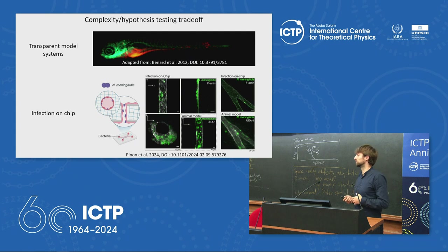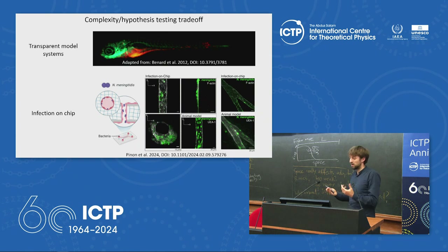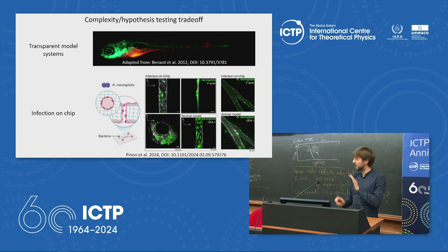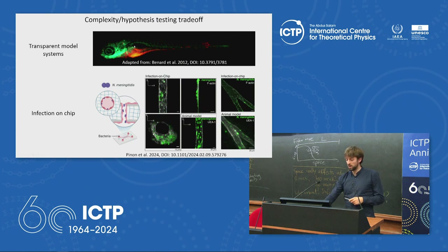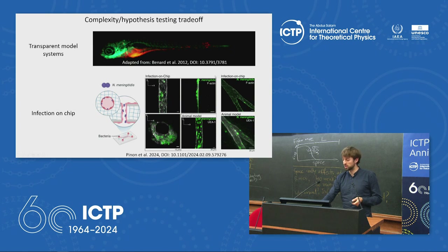Those were ex vivo examples, so it's quite hard to test hypotheses with those, and they're also incredibly hard to come by. One solution that strikes a trade-off between complexity and hypothesis testing is to use models — here you see a transparent model system and microfluidics approaches that can also go by the name of 'infection on chips,' in which people try to mimic structures of animals, here showing blood vessels infected at the bottom.